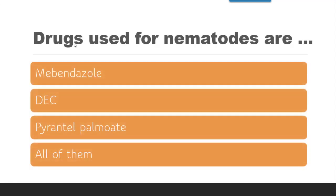Next question: Drugs used for nematodes are — whether mebendazole, DEC, pyrantel pamoate, or all of them. According to the classification of anthelmintic drugs by phylum, anthelmintics acting on nematode, cestode, and trematode are classified separately. Drugs used for nematode treatment are mebendazole, DEC, and pyrantel pamoate — all of them. So the correct answer is all of them.